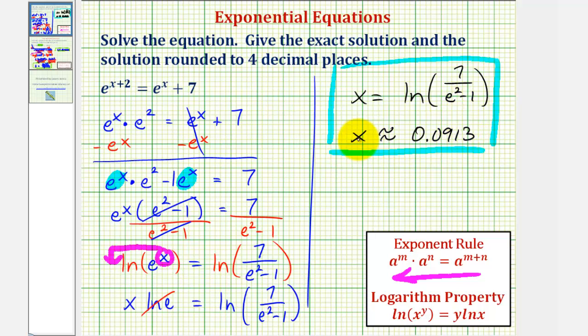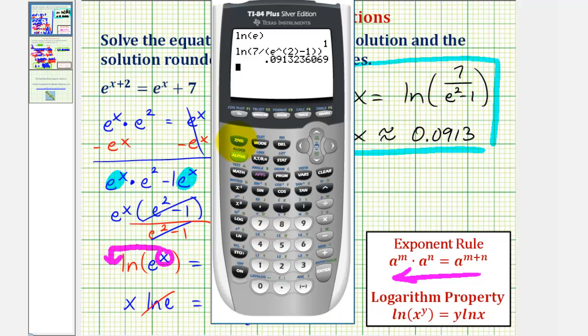Let's take a moment and check our solution. If we substitute this value in for x, the left side should be approximately equal to the right side. I say approximately because this is a rounded solution, but it is much easier to enter than the exact solution. So e raised to the power of 0.0913 plus 2,